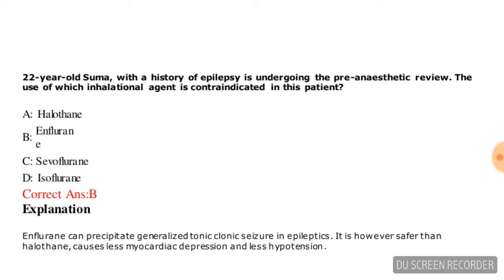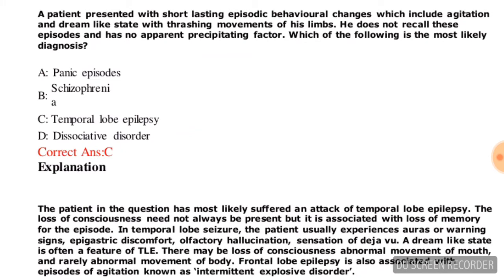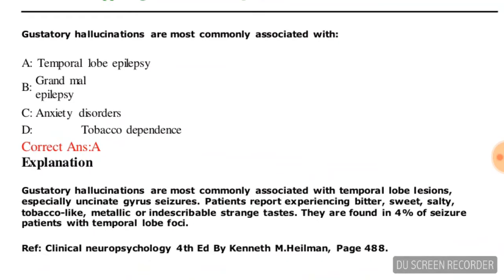Now let's move to the next question. A patient presented with short-lasting episodic behavioral changes which include agitation and dream-like state with thrashing movements of his limbs. He does not recall these episodes and has no apparent precipitating factor. Which of the following is the most likely diagnosis? Options are panic episode, schizophrenia, temporal lobe epilepsy, or dissociative disorder. The correct answer is temporal lobe epilepsy.